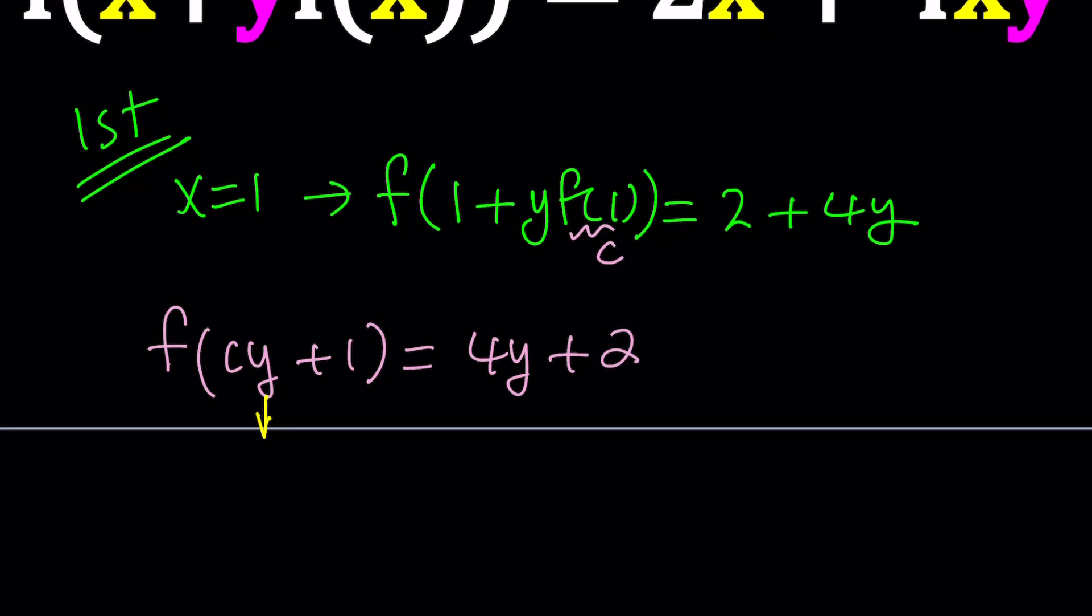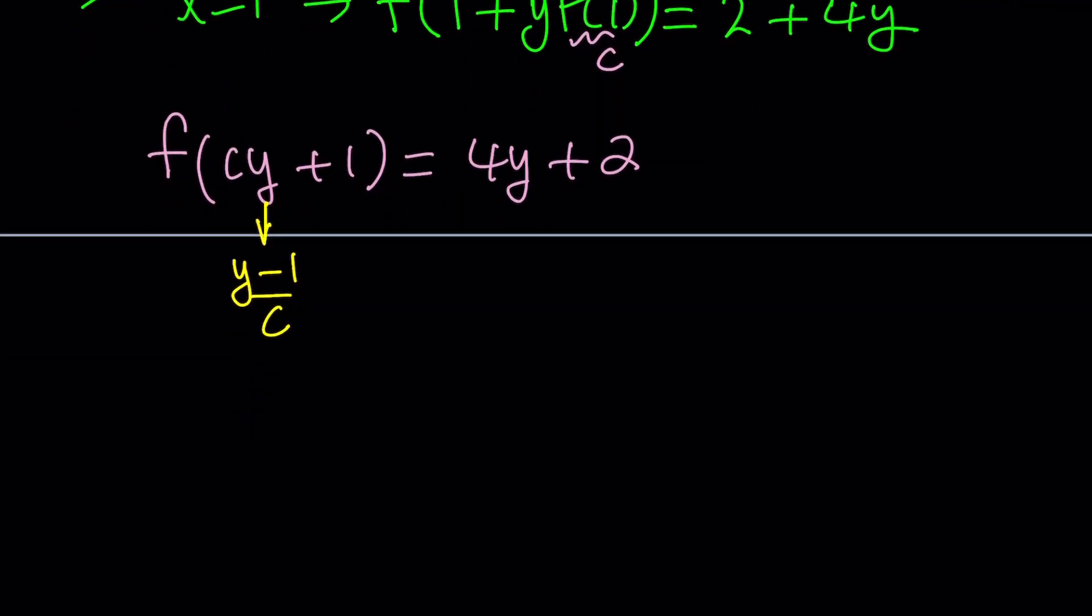If you replace y with (y-1)/c, now think about it, you're going to go ahead and multiply this by c, and the c is going to cancel out. You're going to end up with y minus 1, and then when you add 1, the 1 and the negative 1 is going to cancel out. You're going to end up with y inside the parentheses. Make sense?